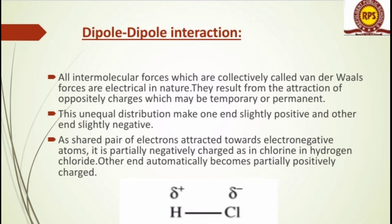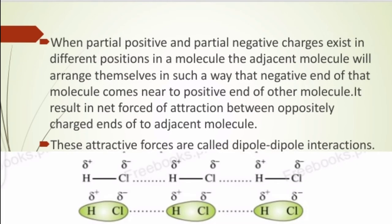A pair of electrons is attracted towards the electronegative atom, making it partially negative — as in chlorine in hydrogen chloride — while the other atom automatically becomes partially positive. When partial positive and partial negative charges exist in different positions in a molecule, the adjacent molecules arrange themselves so that the negative end comes nearer to the positive end of the other molecule, resulting in a net force of attraction.